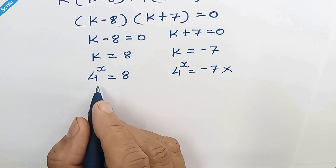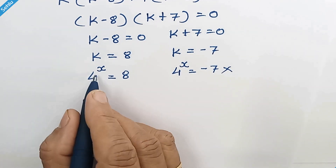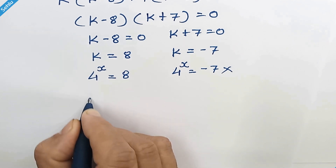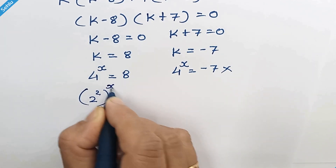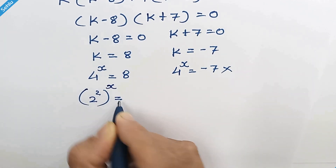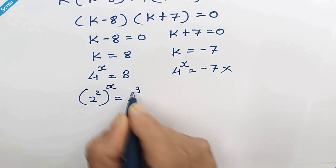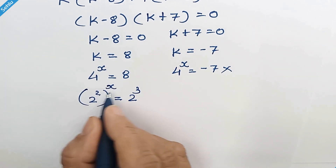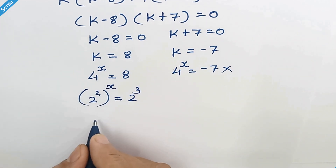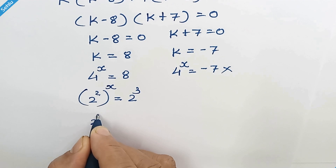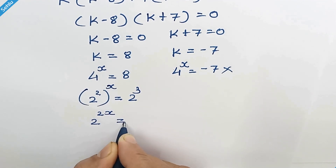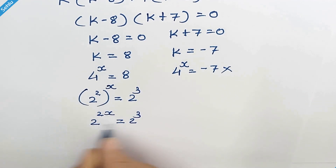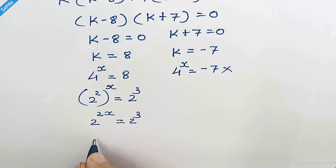Let's continue from here. 4 is 2 squared, so 2 squared whole raised to x is equal to 8, which is 2 cubed. Multiplying the exponents on the left side gives us 2 raised to 2x is equal to 2 cubed. Since we have the same base, we can equate their exponents.